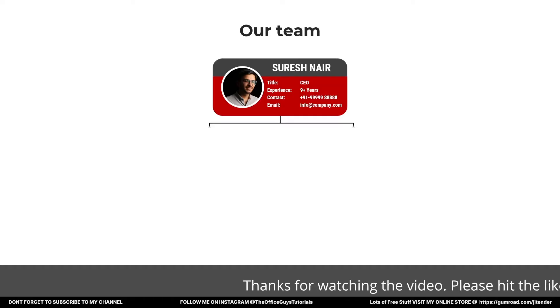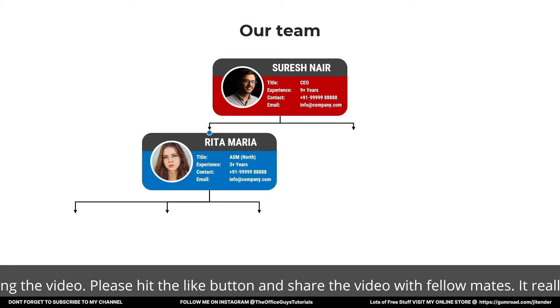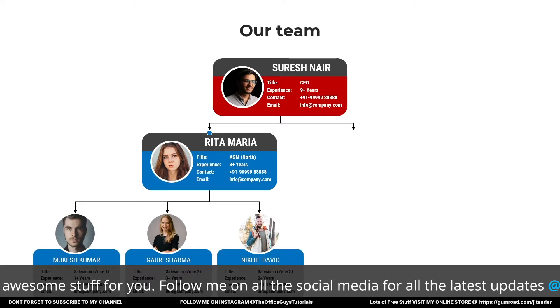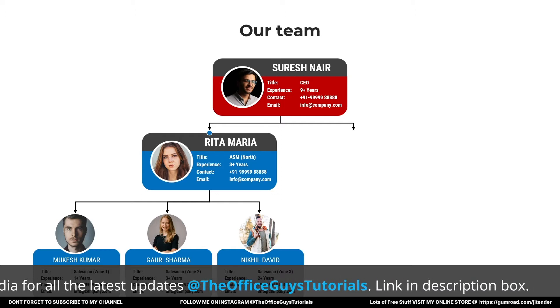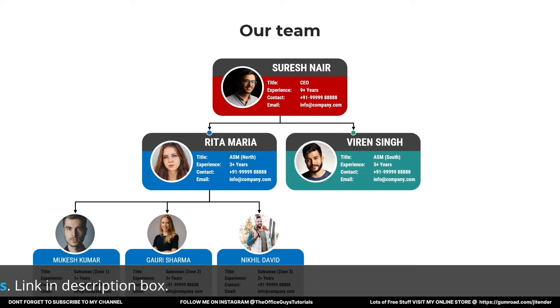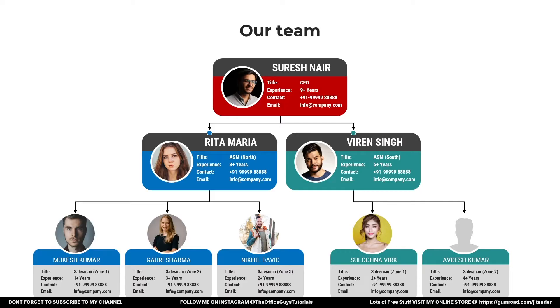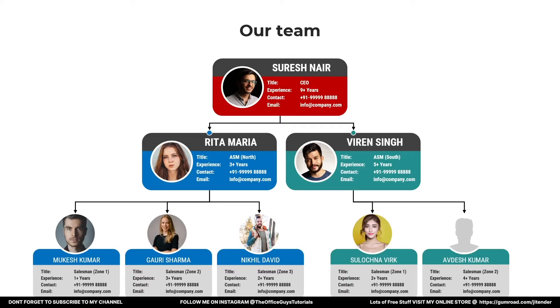Here on the screen you can see we have our team. We have the CEO of our company, then we have two ASMs. Rita Maria is ASM for the North division and she has three salesmen under her, and Viren Singh is ASM for the South division with two more people under him. Each card shows their photo, name, title, experience, contact, and email. We also have a blank photo placeholder for employees who haven't submitted their profile picture.